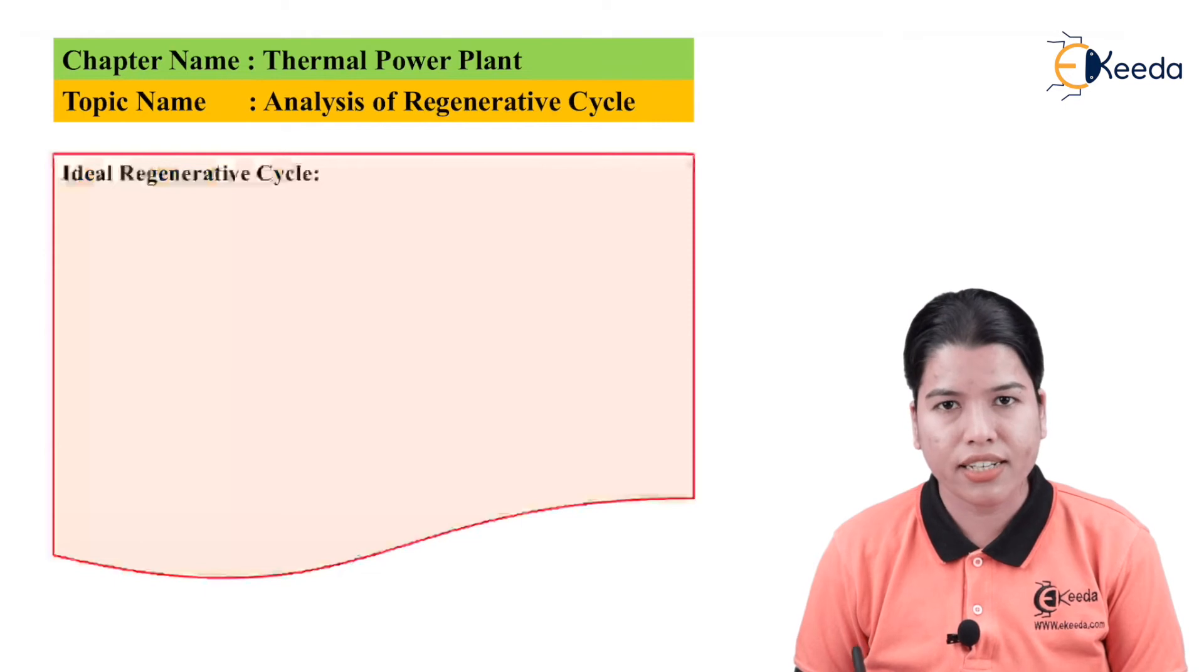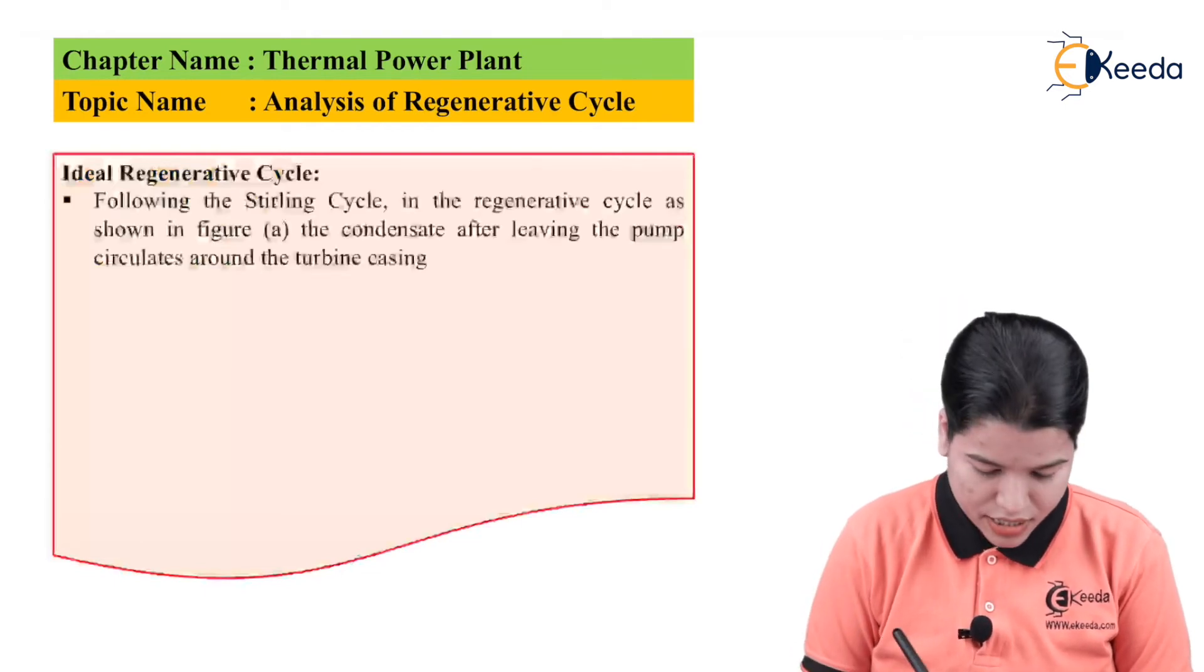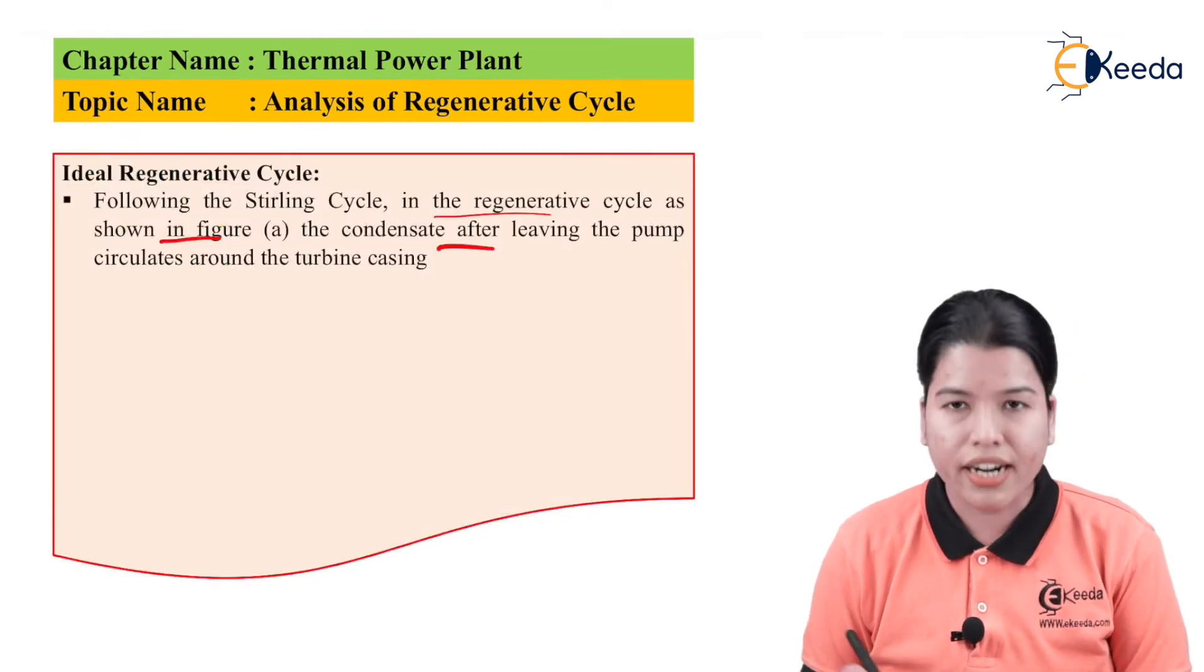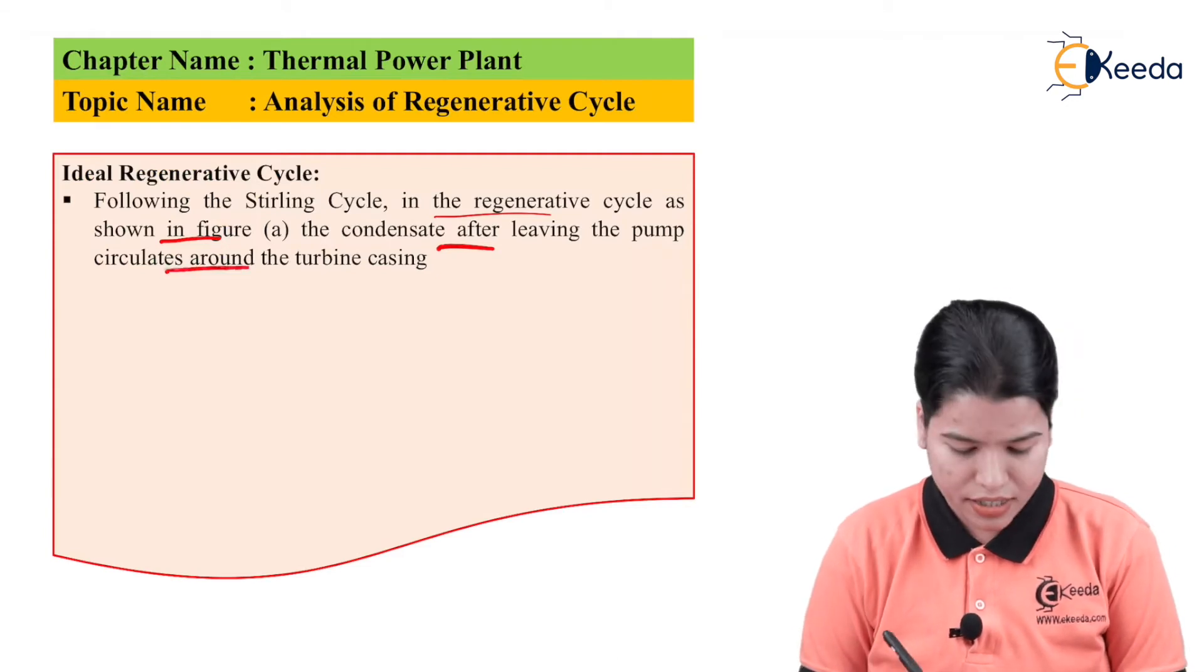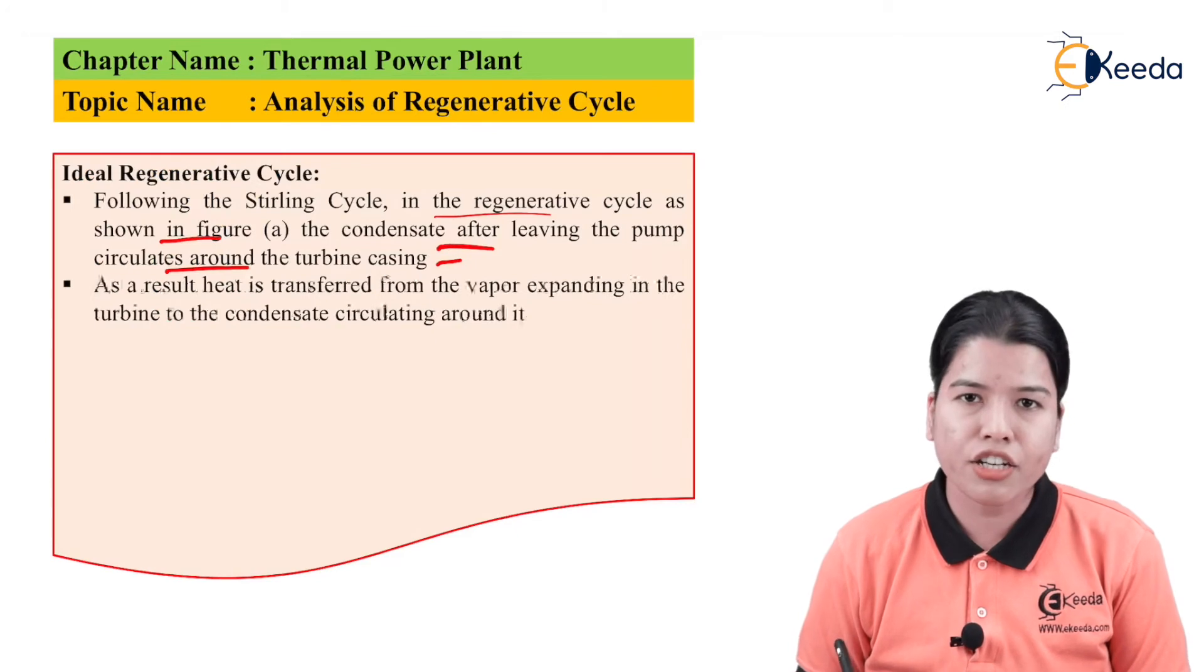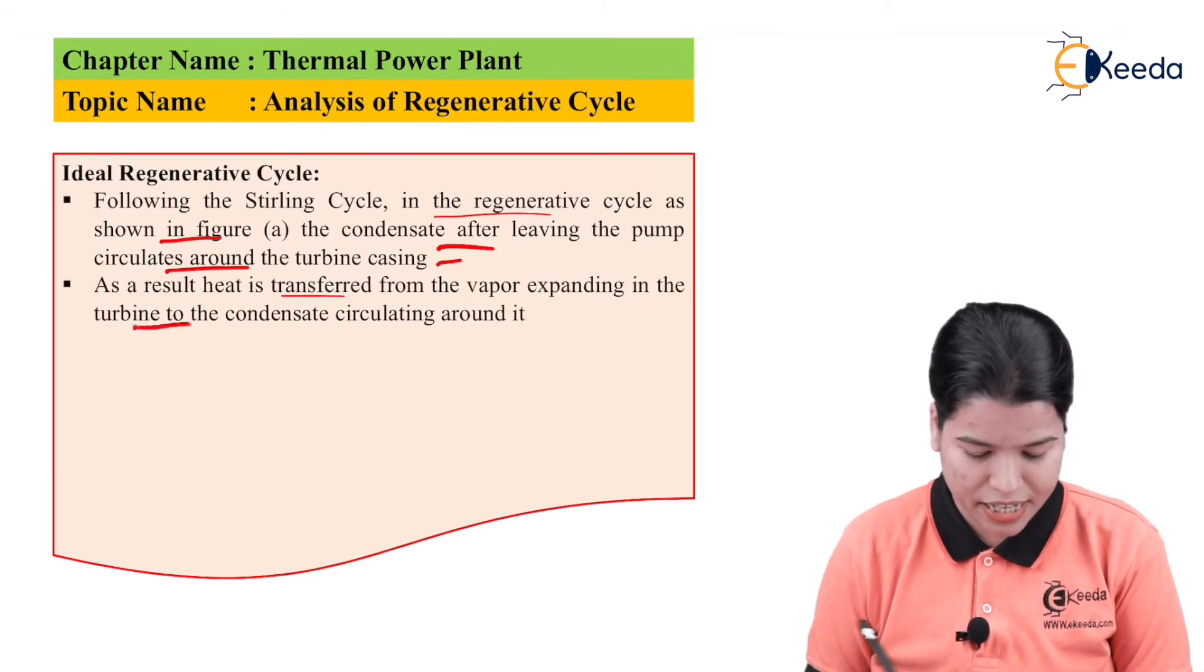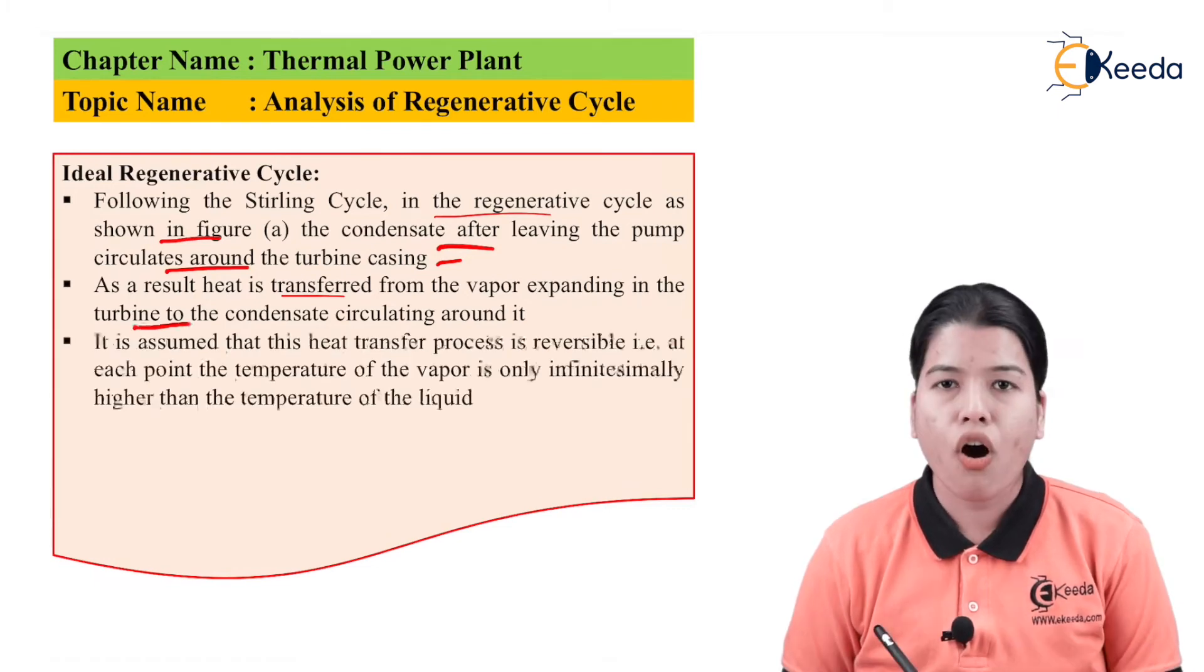Now, let us study the ideal regenerative cycle. Following the Stirling cycle, in the regenerative cycle as shown in figure A, the condensate after leaving the pump circulates around the turbine casing. As a result of this, heat is transferred from the vapor expanding in the turbine to the condensate which is circulating around it.